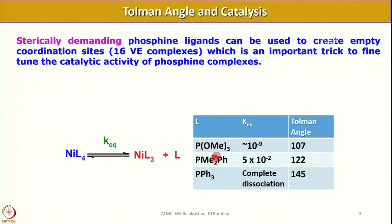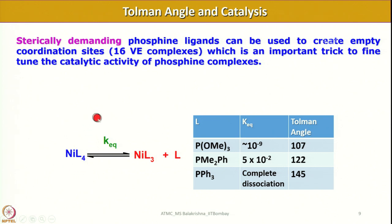I have listed three ligands and the corresponding tetrakis metal complexes. One such complex is NiL4, where L is a neutral phosphine ligand and nickel is in the zero-valent state — it is an 18-electron complex. If you want to use this in catalysis, since it is an 18-electron species, we cannot perform any oxidative addition. As a result, one has to dissociate one or more ligands before using it as a catalyst. Sterically demanding phosphine ligands can be used to create empty coordination sites or 16-valence-electron complexes, which is an important trick to fine-tune the catalytic activity of phosphine complexes.